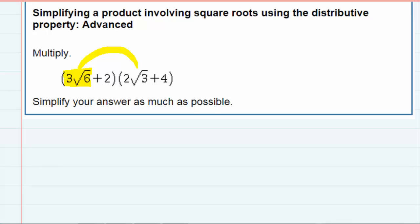So on the outside, three times two would give me six, and on the inside of the radical, the square root of six times the square root of three would give me the square root of 18.